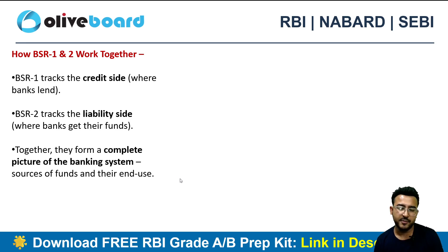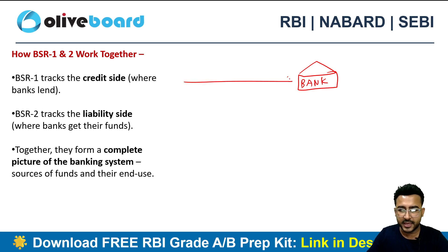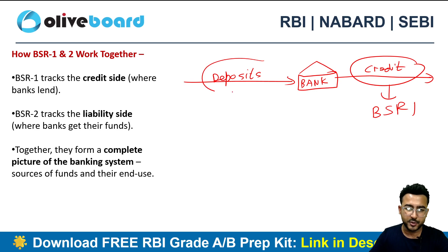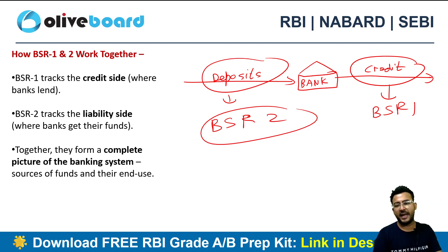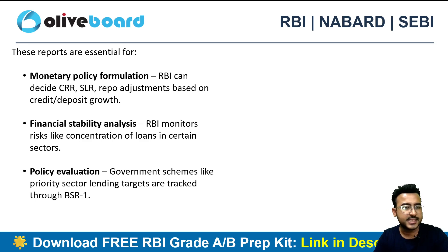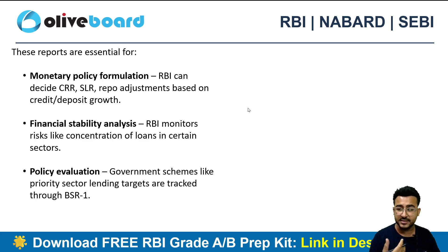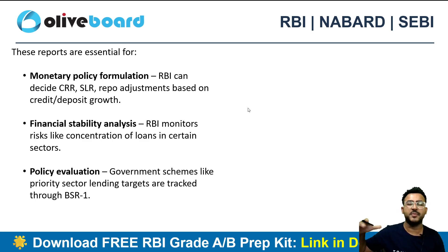BSR 2 is the liability side of the bank. If we talk about the business model of a bank, banks take deposits and give loans and advances — that's the credit. Credit-related things are tracked in BSR 1 and deposit-related things are tracked in BSR 2. Together they give us a complete picture of the banking system as a whole. This report is essential as it helps in monetary policy formulation, financial stability analysis, policy evaluation, understanding which sectors money is flowing into, and how deposits are being utilized by banks.